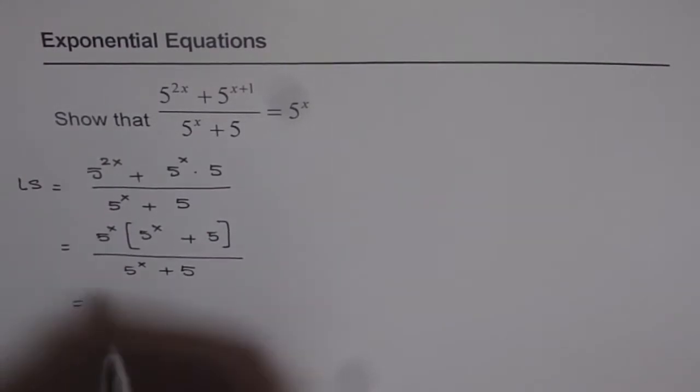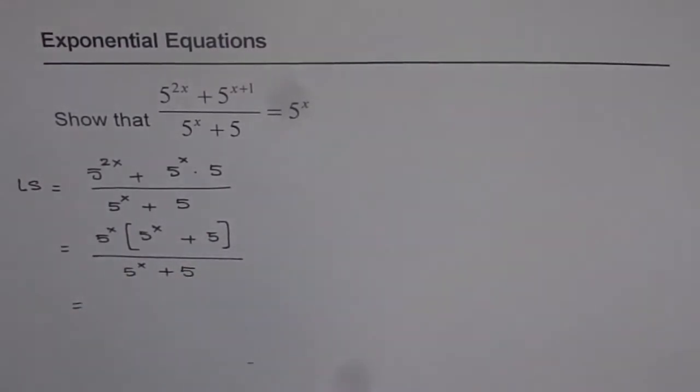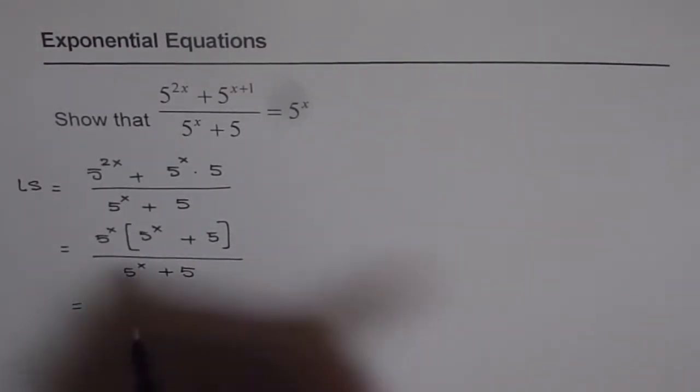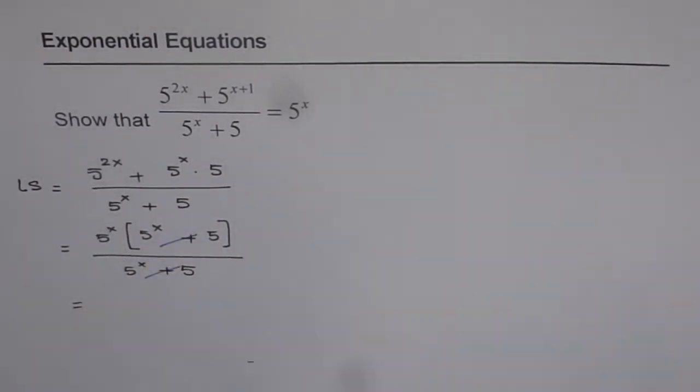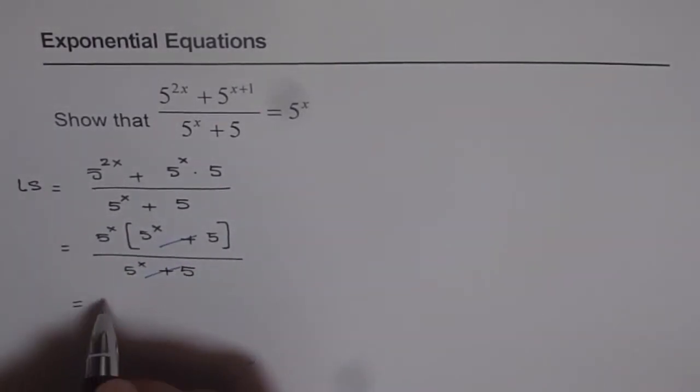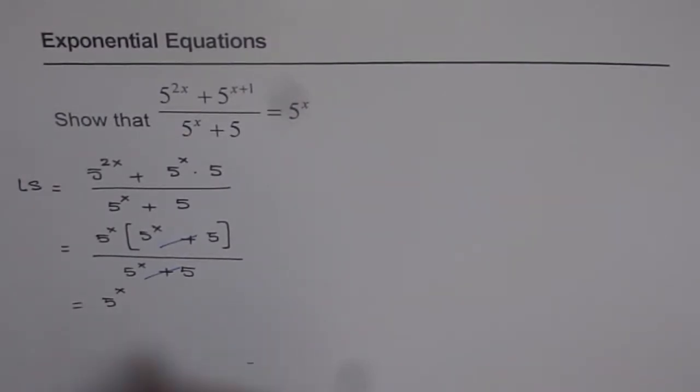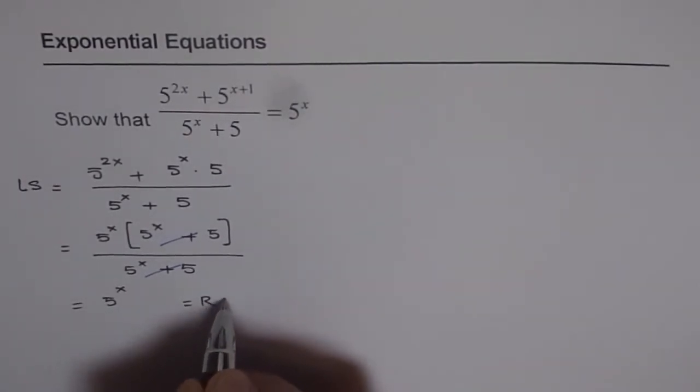Now we can cancel out 5 to the power of x plus 5. These are common factors in numerator and denominator. And so we do get 5 to the power of x, which is equal to the right side.